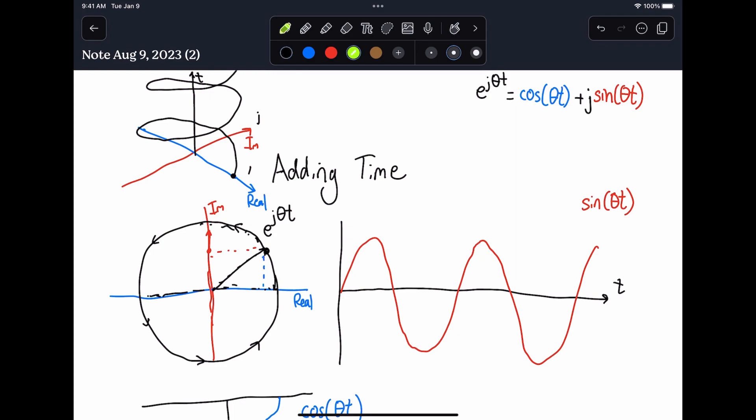And then this frequency here, theta, controls kind of the spacing between these particular parts. When theta equals 1, you have basically a full rotation in 360 degrees or 2 pi, but theta also has a multiple. So if theta is 1 half, then you would basically need to take twice as long to complete your full rotation.